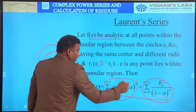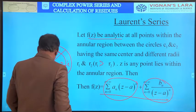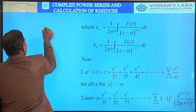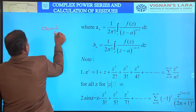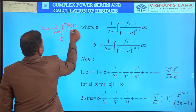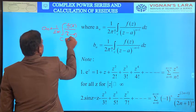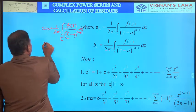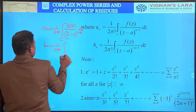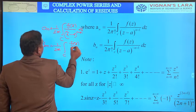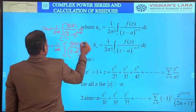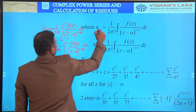The Laurent series involves both positive and negative powers of z minus a. The coefficients are: a_n equals (1/2πi) times the integral of f(z)/(z-a)^(n+1) dz by Cauchy's general integral formula, and b_n equals (1/2πi) times the integral of f(z)/(z-a)^(-n+1) dz over c.